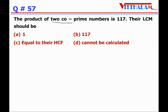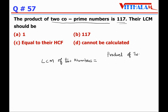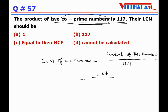Question 57: The product of two co-prime numbers is 117. Their LCM should be? LCM = product of two numbers / HCF. Since both numbers are co-prime, their HCF is 1 — because co-prime numbers are those whose HCF is 1. Therefore LCM = 117 / 1 = 117. Answer is B.